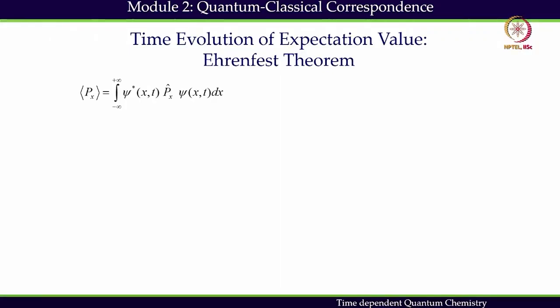We have seen that average position follows classical trajectory in quantum dynamics. Similarly, we can find the expectation value of the momentum, and we can calculate it very easily because we have seen the derivation for the position space. A similar derivation can be used for the momentum and we write down: (i/ℏ) times the integral from minus infinity to plus infinity of psi-star times [H, p] psi dx.